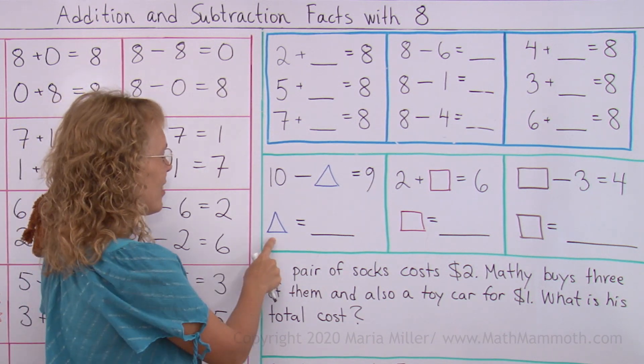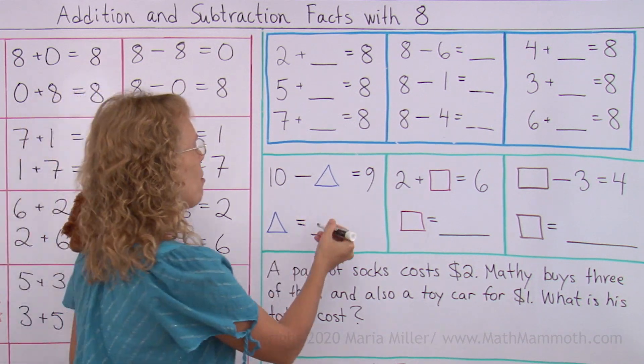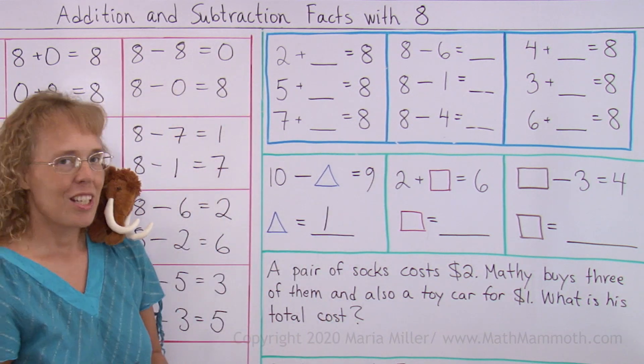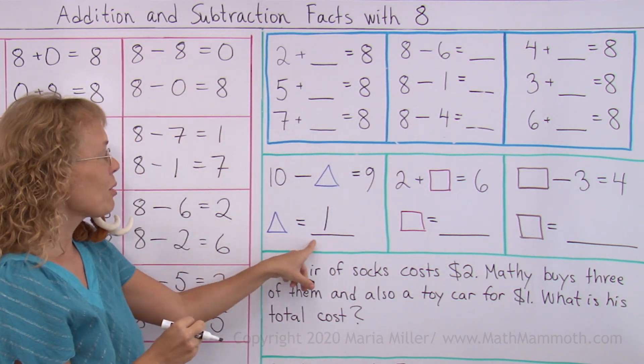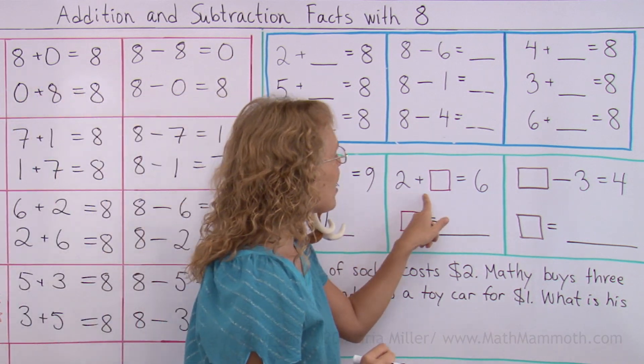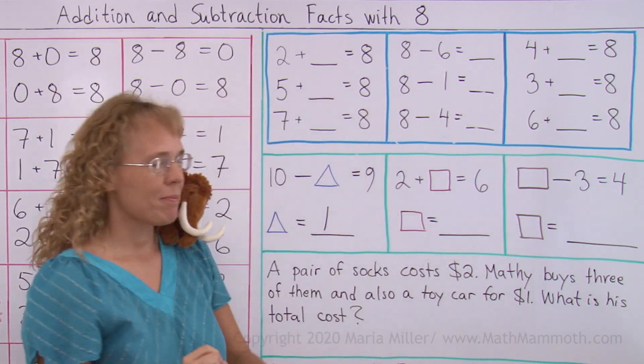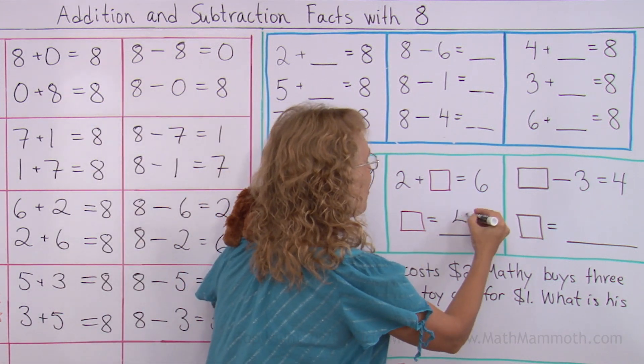Yeah, it is. But the difference is, this time we're gonna have the triangle equals 1. In other words, I'm not gonna write that number 1 here. I'm just gonna put here that the triangle equals 1. That's my solution for the equation. 2 plus what number makes 6? 4. Right. The square equals 4.